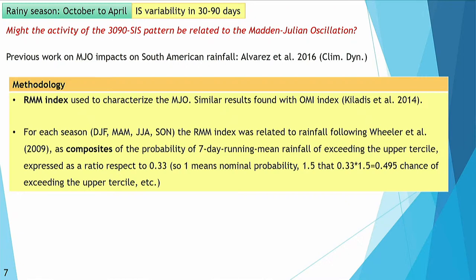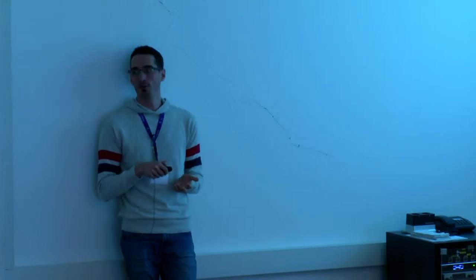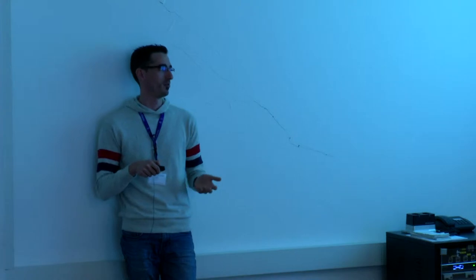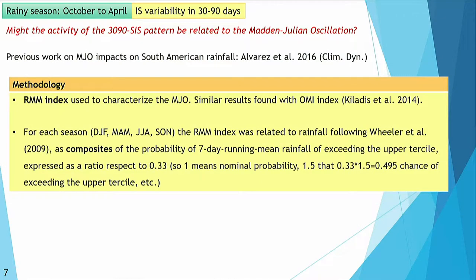Regarding the rainy season and the intraseasonal activity in the 30-to-90-day band, we were wondering if this activity seen in the tropical region might be related to the Madden-Julian Oscillation. For that we used another study in which we used the RMM index to characterize the MJO — we found similar results with the OMI index. For each season we related the RMM index to rainfall in South America following Wheeler 2009, and computed composites of the probability of seven-day running mean weekly rainfall exceeding the upper tercile, expressed as a ratio to 0.33, so a value of 1.5 would mean a 50% increase in that probability.